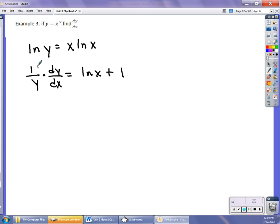To get dy/dx, multiply through by the original equation. So dy/dx equals x^x times (ln(x) + 1). This 1 came from the derivative of x ln(x): ln(x) plus x times 1/x, which simplifies to ln(x) + 1.